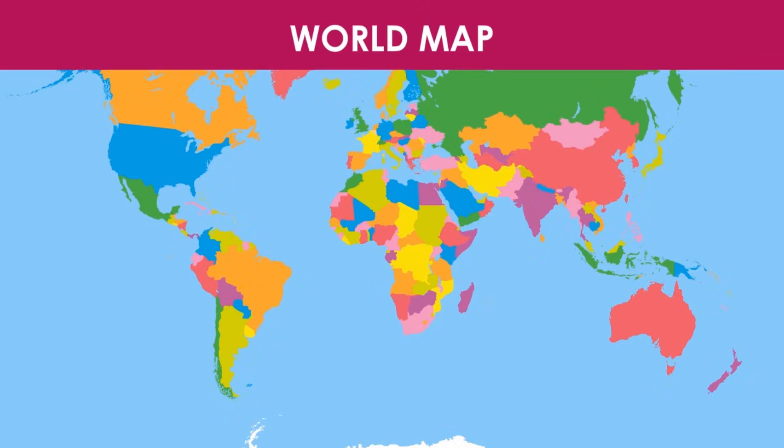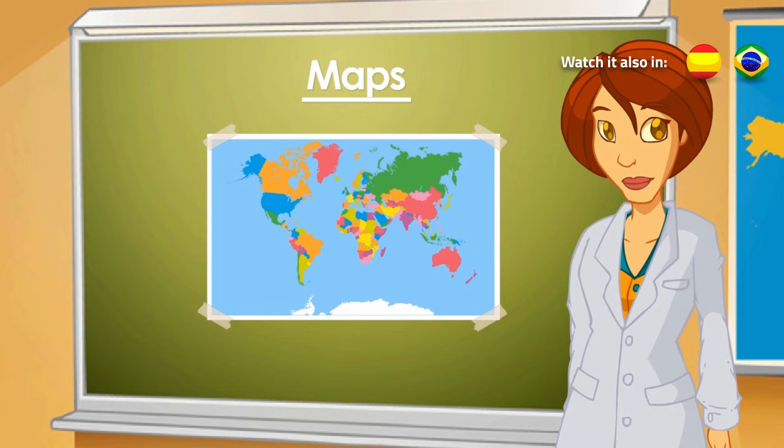This is a world map. It shows all the countries of the world on paper. The colors you see are used to identify each country. The map I'm showing you is a political map.